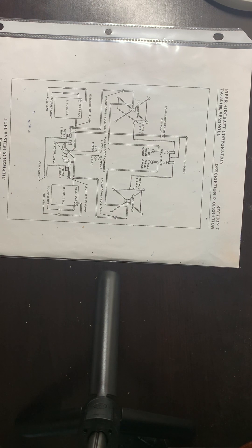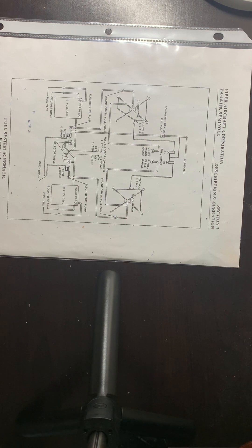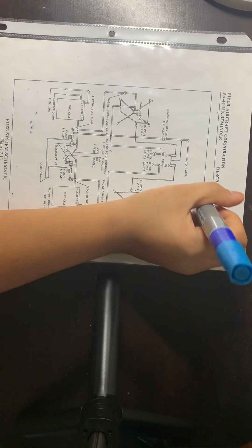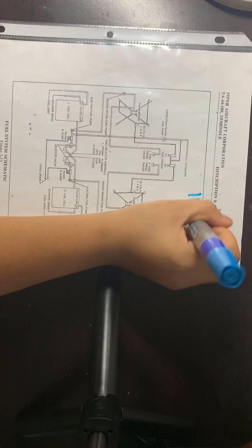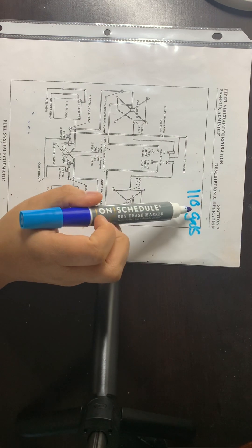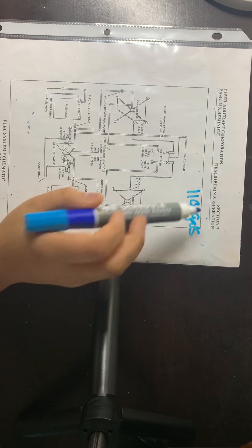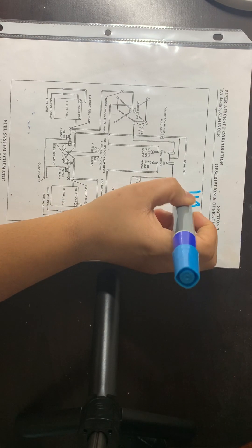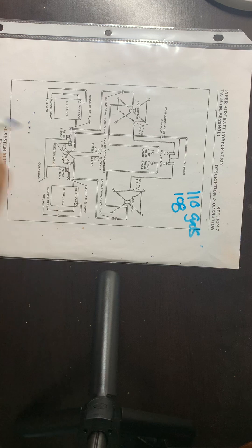Hey everyone and welcome back to my channel. Today I will talk about the Piper Seminole fuel system. First and foremost, the Piper Seminole holds 110 gallons total capacity. Out of that 110, only 108 gallons will be usable, which makes 2 gallons unusable.